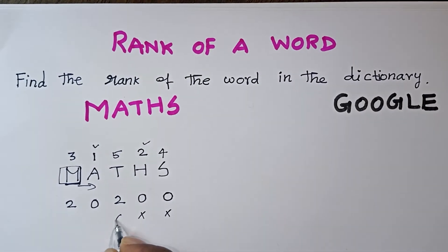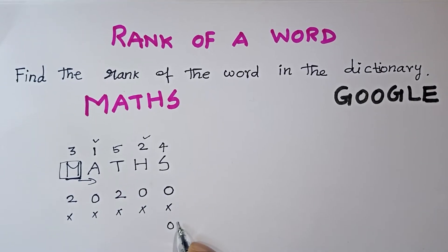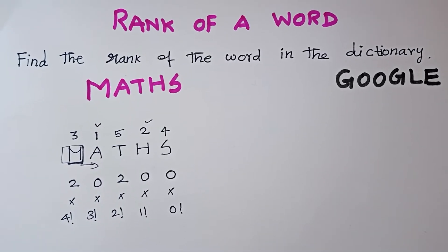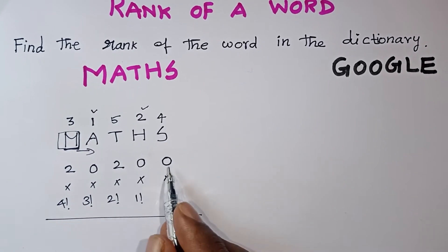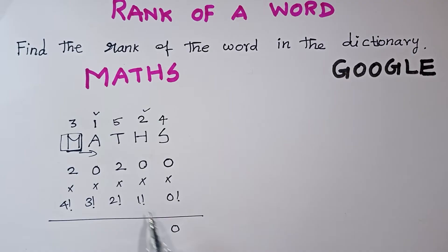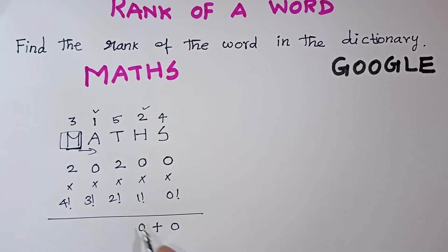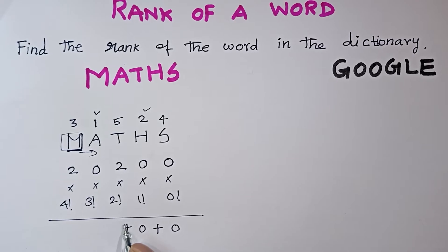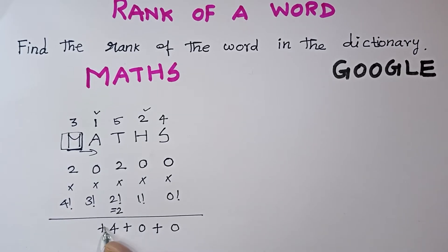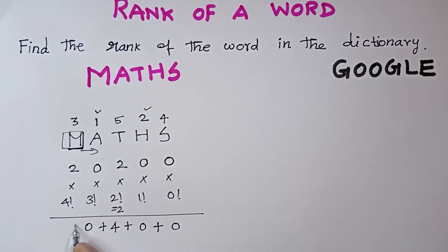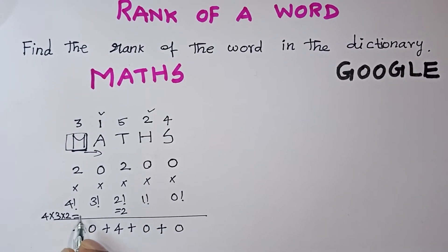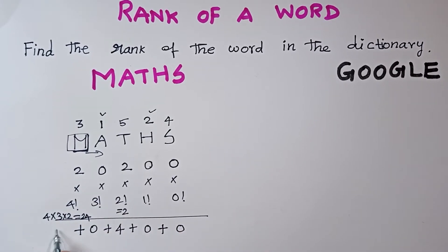How do we calculate the factorial? 0!, 1!, 2!, 3!, 4! — how do we multiply? 0 into 1 gives 0!. Then 1!, then 2!, then 4! — 4! equals 24. So 2! is 2, and 2 times 24 is 48.